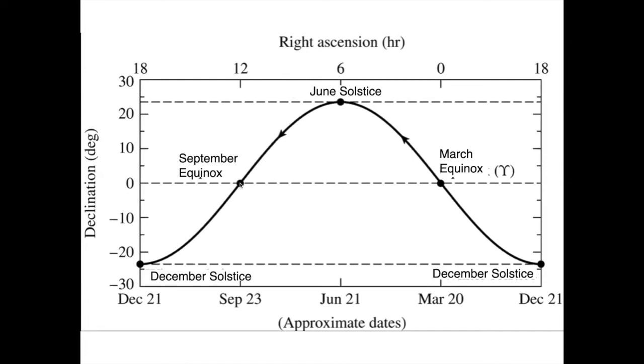And when the Sun is on the equator, it defines the equinox. Equinox comes from Latin equinoctium, which means equal nights. It's the instant when the Sun is at the celestial equator, so you have days and nights of equal duration.